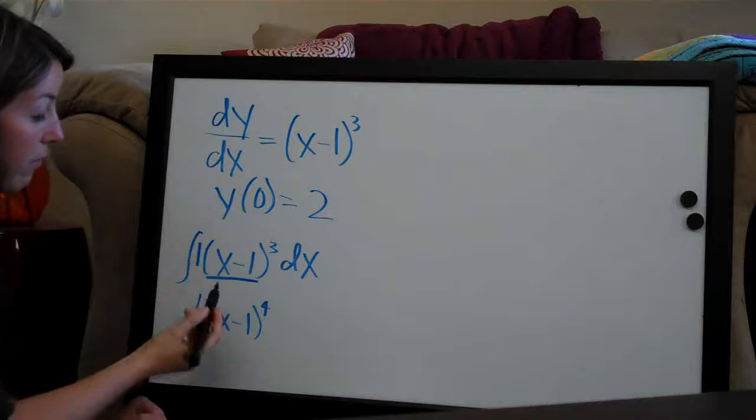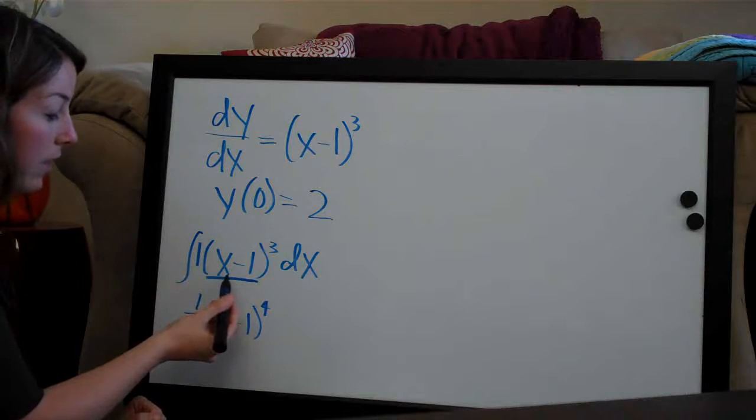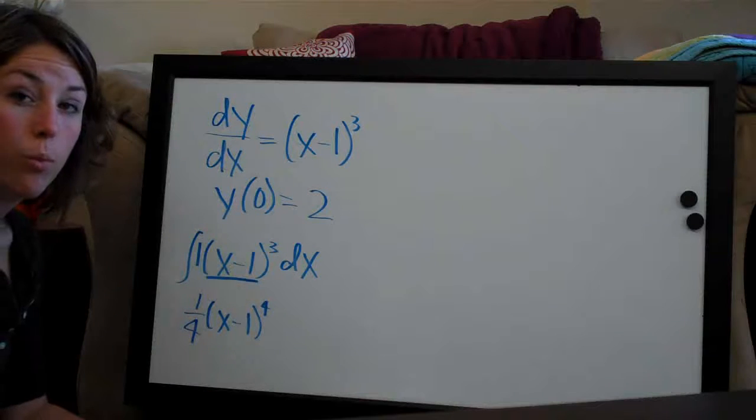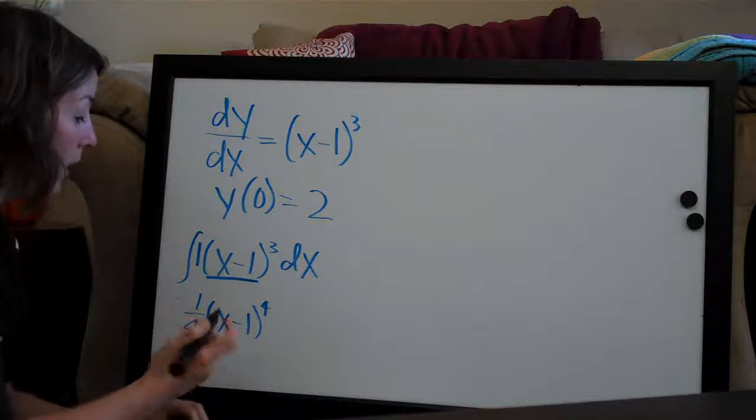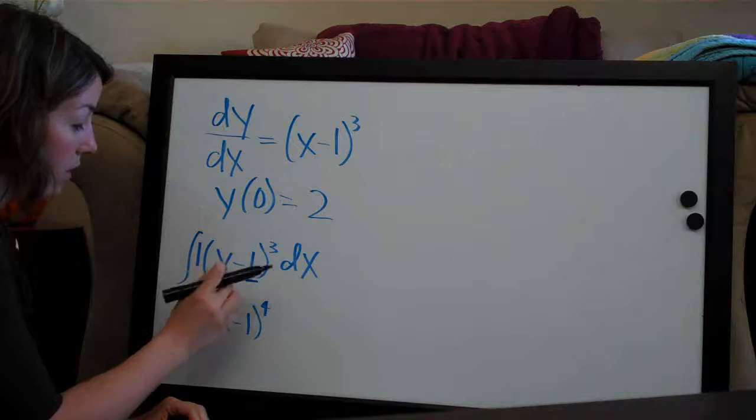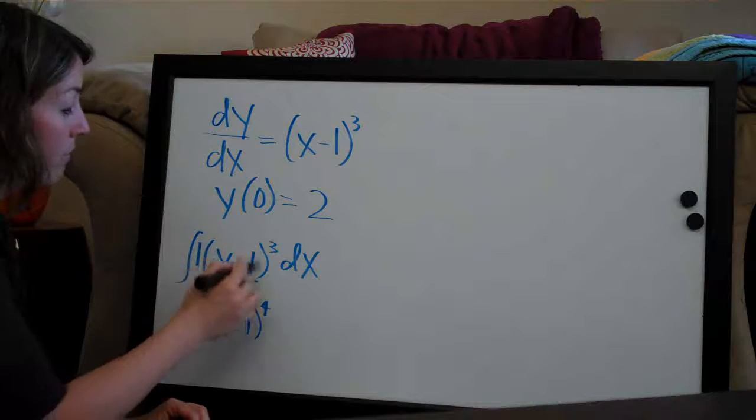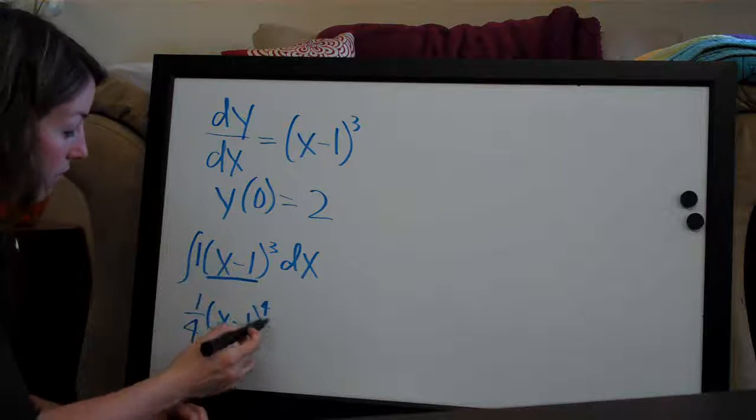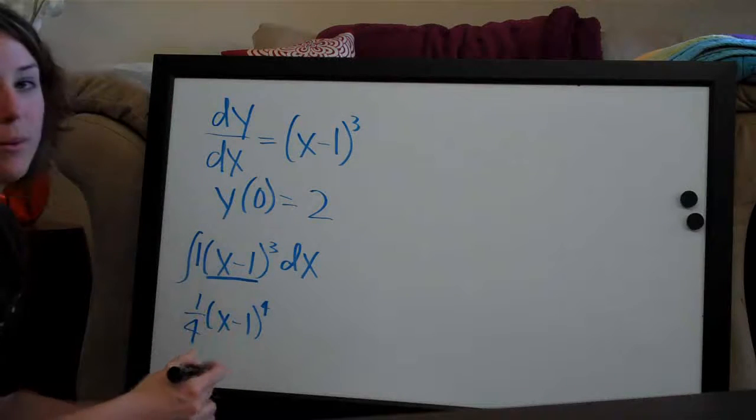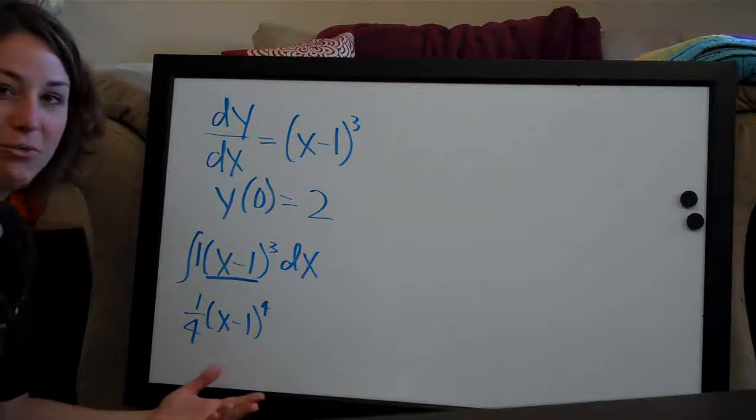So the way that we do that is take the derivative of the inside, and the derivative of x-1 is simply one which comes from the x here and this one goes away because it's a constant. So the derivative of the inside being one, we have to divide this entire function by one but of course that has no effect on the function.